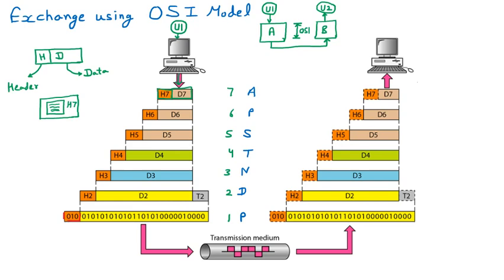This combined data and header becomes D6 — data for the presentation layer. The presentation layer then adds its own header H6. Think of it as passing the letter to the next person, who puts another envelope on it. Seven people are going to put seven envelopes, making the data more secure.